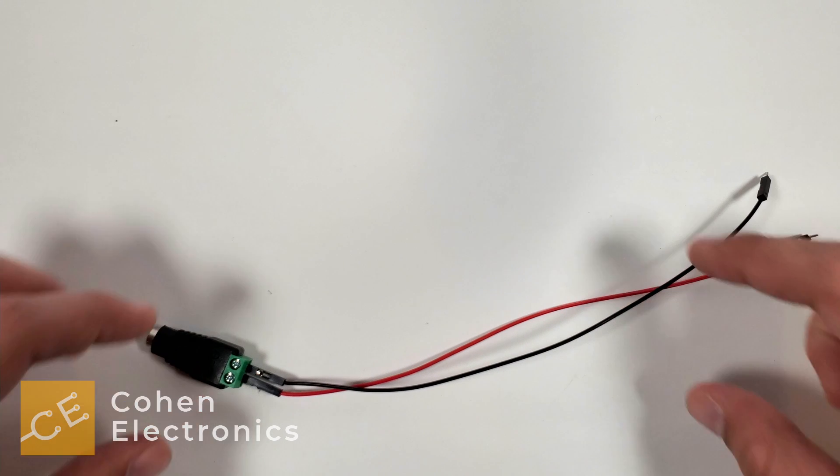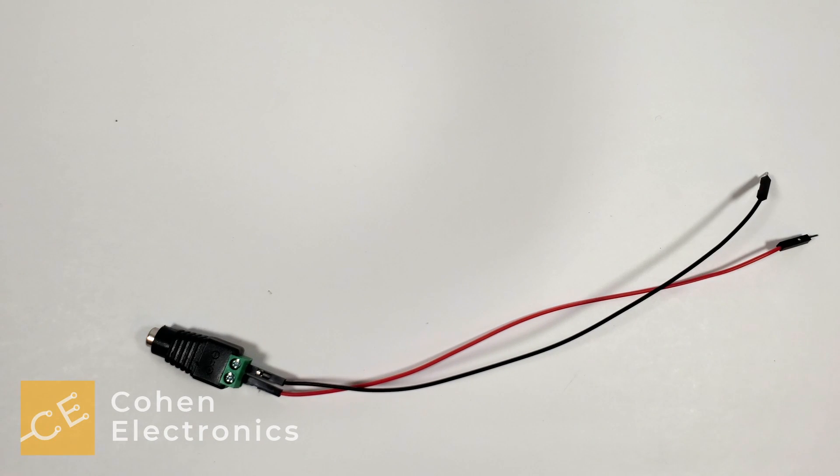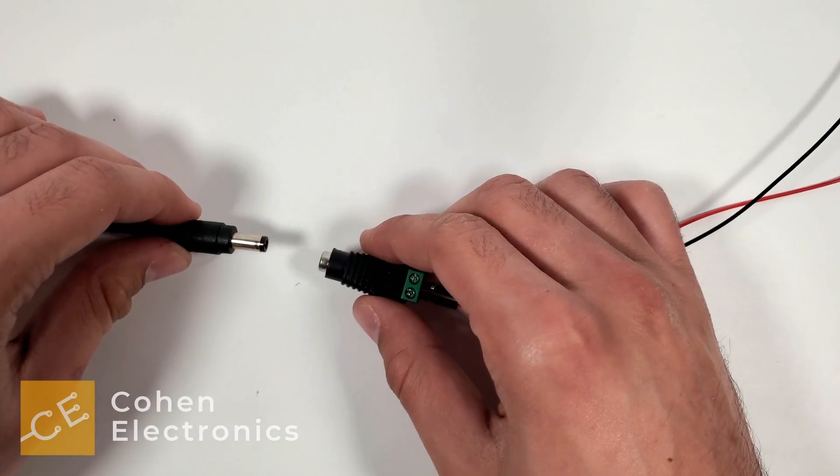Now get the DC barrel adapter and attach two wires. Grab the DC power supply cable and connect the two.